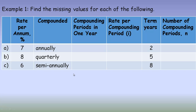In the first example, we're given a rate of 7% per year compounded annually. Annually means there's one compounding period per year. Quarterly means 4 times a year — there are 4 quarters in a year. And semi-annually means twice a year.